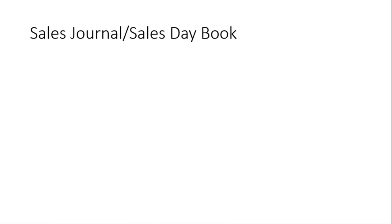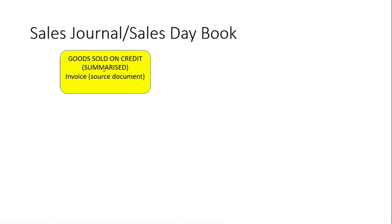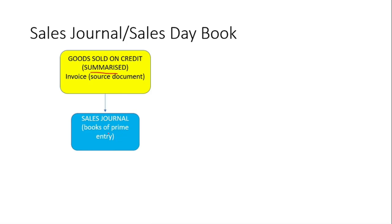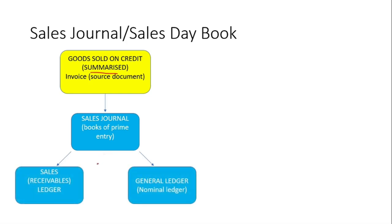For the Sales Journal, also known as the Sales Day Book, it will record transactions that involve goods that are sold on credit. These transactions are summarized and put into the Sales Journal, and once we've got all the summarized information into this book, we can then put them into two ledgers. One will be the Sales Ledger, which will have information on our customers, also known as Trade Receivables.